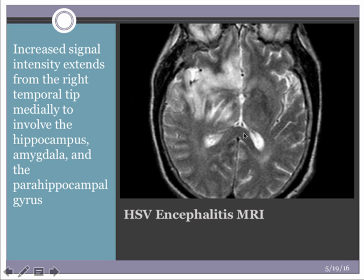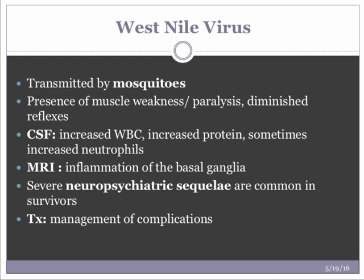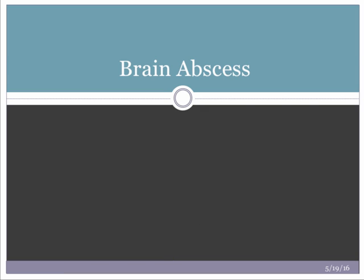MRI shows increased signal intensity from the right temporal tip medially to involve the hippocampus, amygdala, and parahippocampal gyrus. West Nile virus is transmitted by mosquitoes; patients often develop muscle weakness or paralysis and diminished reflexes. CSF shows increased white blood cell count, increased protein, and sometimes increased neutrophils. MRI may show inflammation of the basal ganglia, which may contribute to Parkinson's-like movement disorders. There is no good treatment; management focuses on comfort and complications.